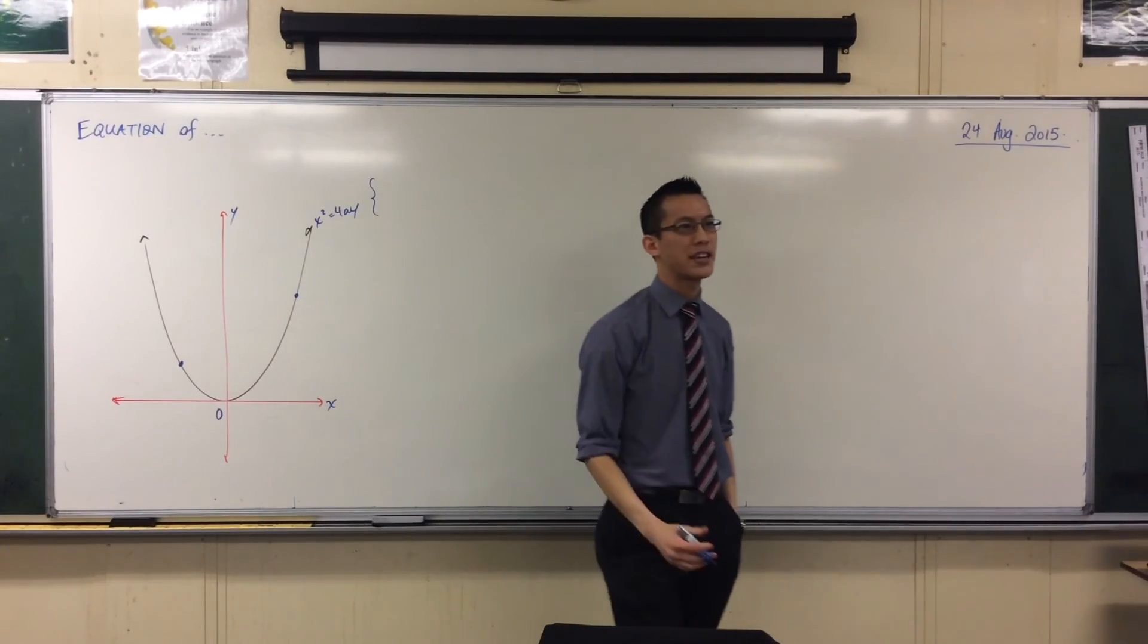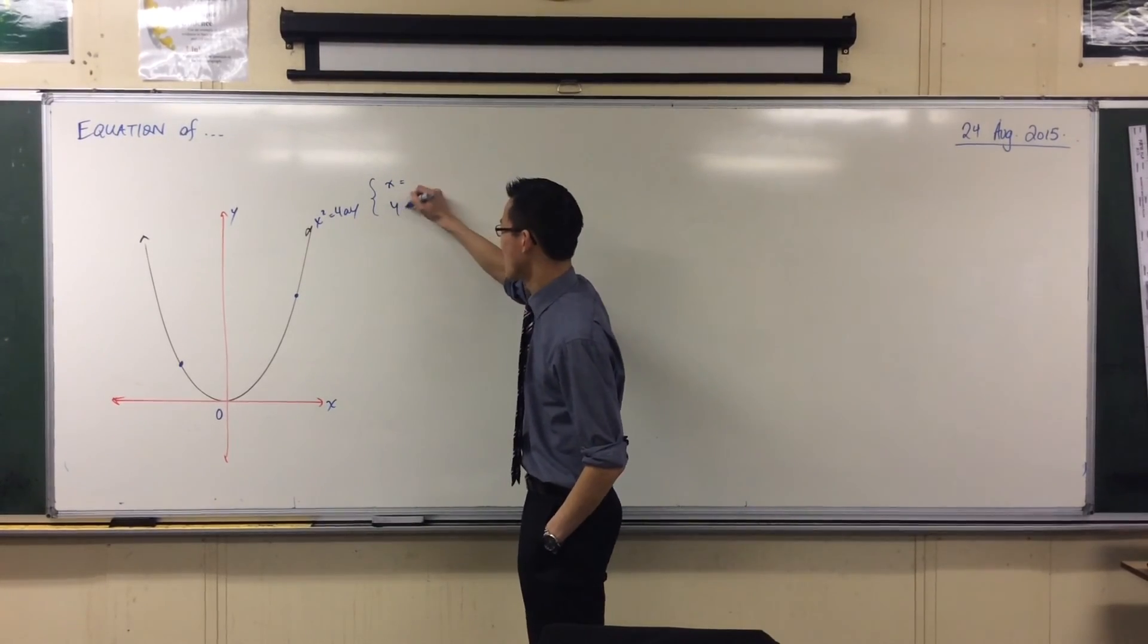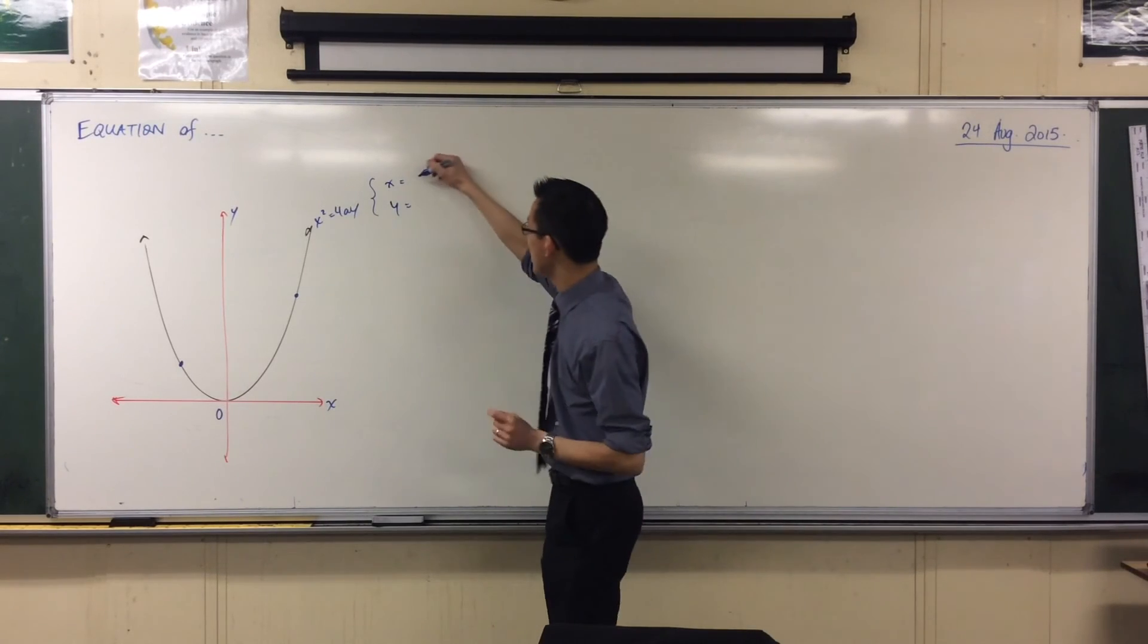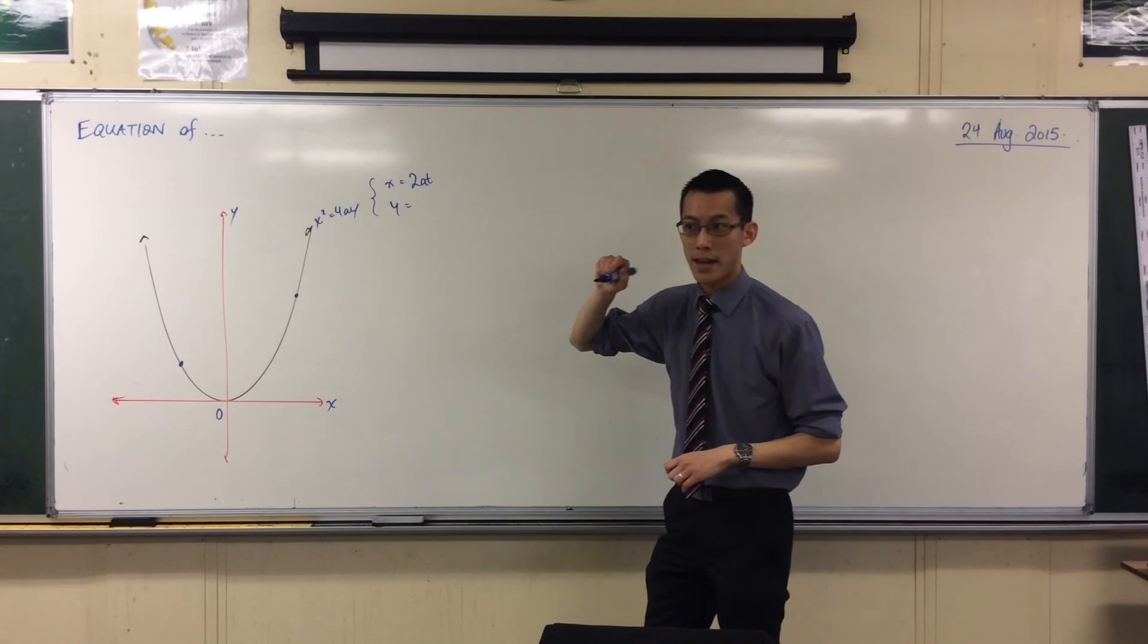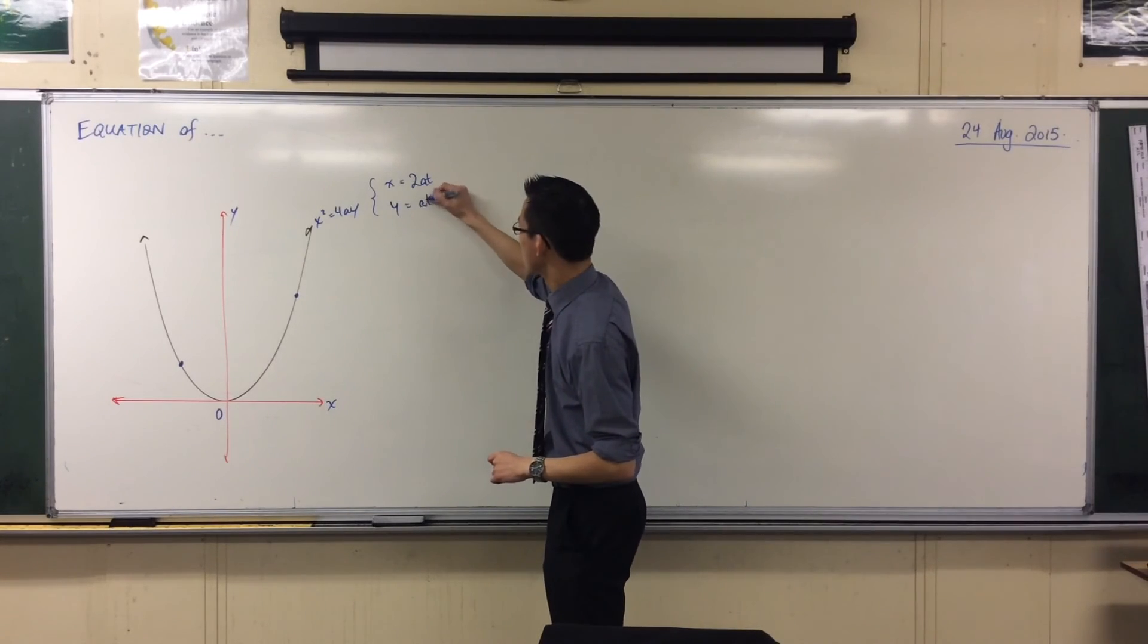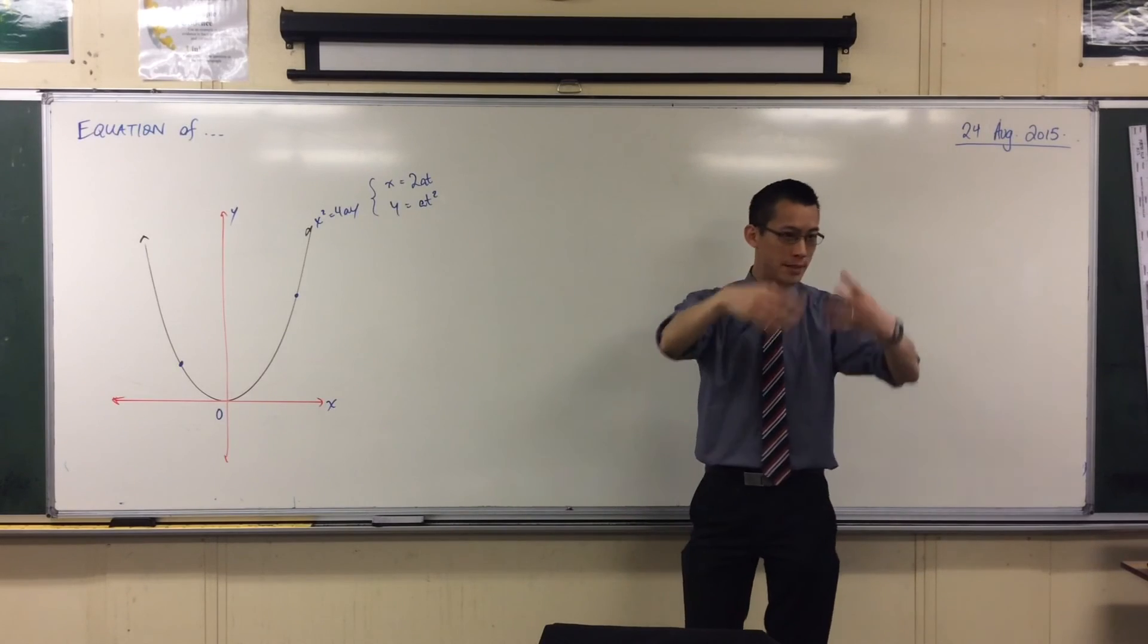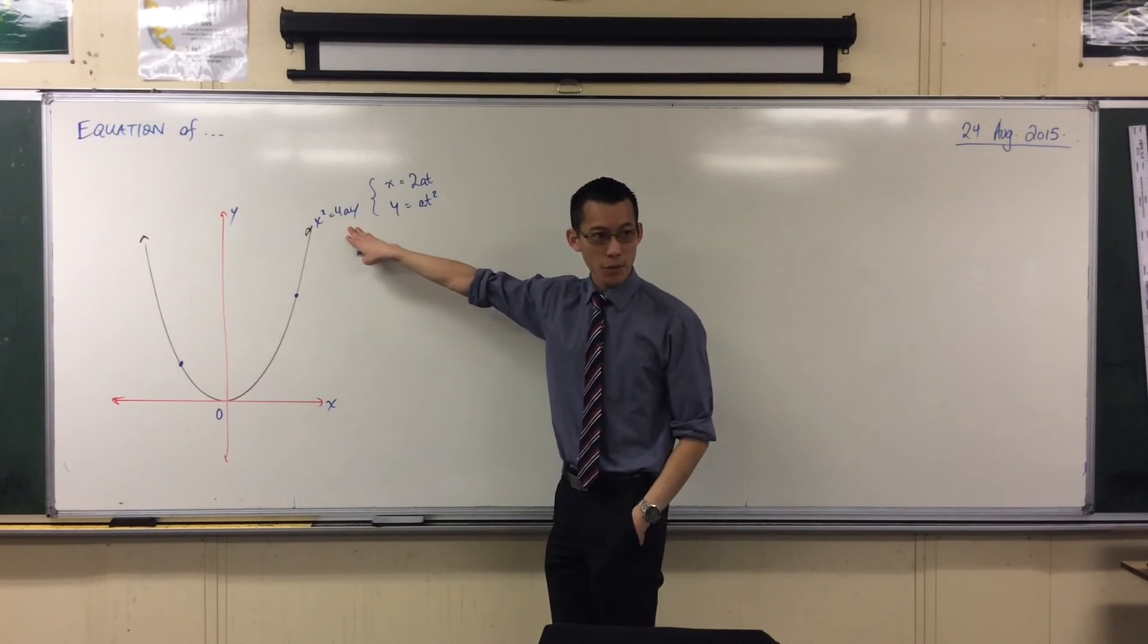What is the pair of parametric equations that we tend to use? I'll give you a clue: x equals, y equals for the coordinates, okay? So our x-coordinate is 2AT and our y-coordinate will be AT squared, right? So this is our pair of parametric equations. And when you jam them together to get rid of the parameter to eliminate it, this is what you end up with, okay?